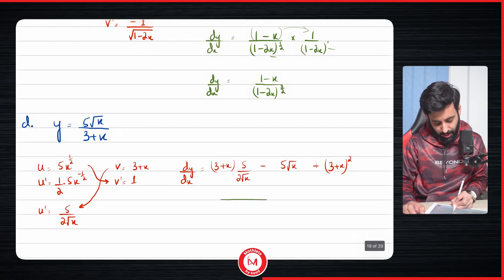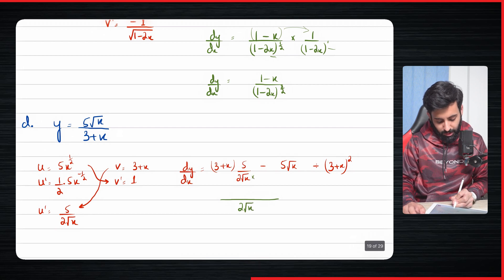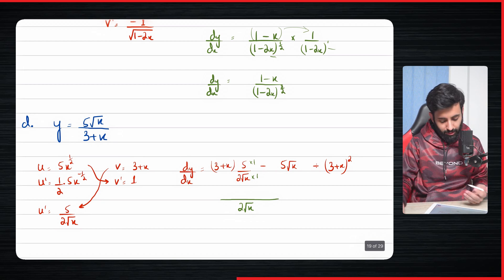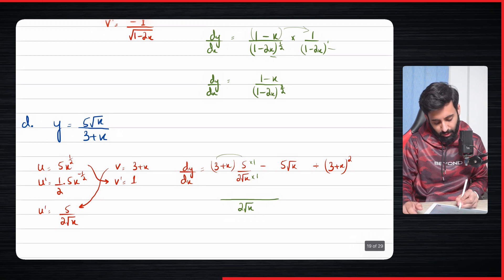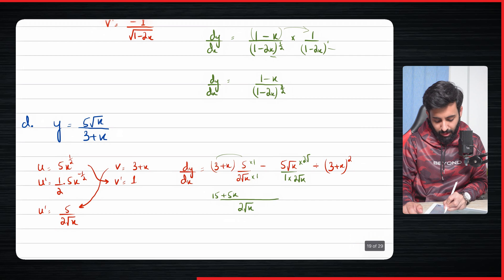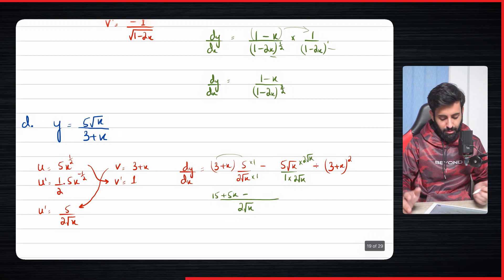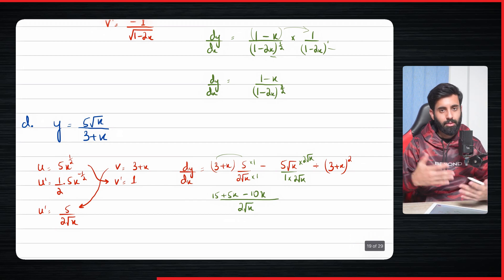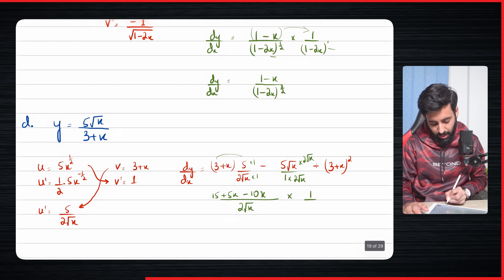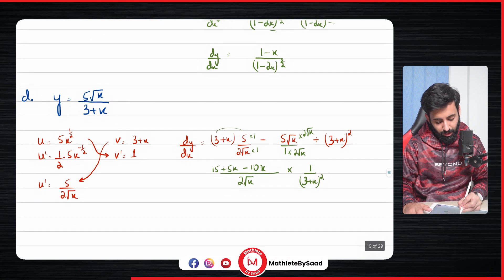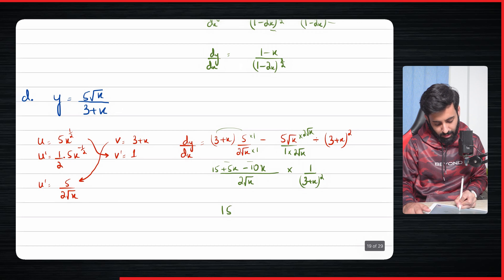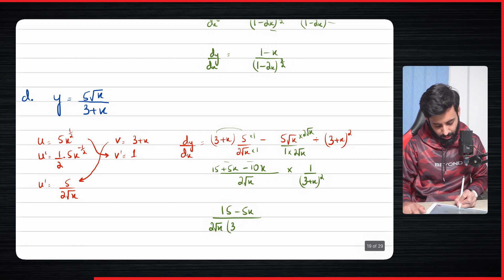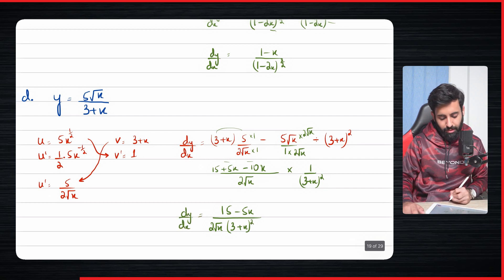Taking the LCM of 2 root x for the numerator: 3 plus x times 5 gets multiplied by 1, giving 15 plus 5x. Then 5 root x needs to be multiplied by 2 root x to get the common denominator — root x times root x gives x — so that term becomes 10x. Changing division to multiplication by reciprocating, we get 15 plus 5x minus 10x equals 15 minus 5x. So dy by dx equals 15 minus 5x over 2 root x, multiplied by 3 plus x the whole thing squared. This cannot be simplified further, so this is the final answer.